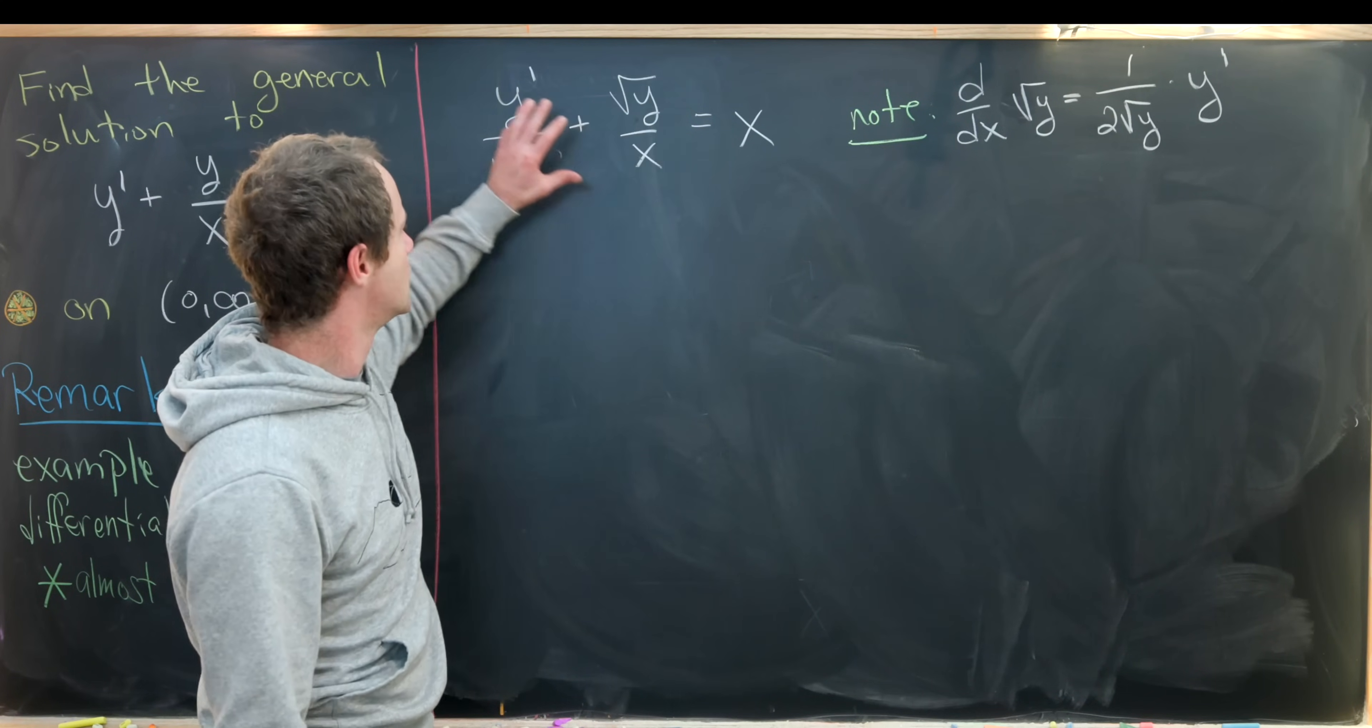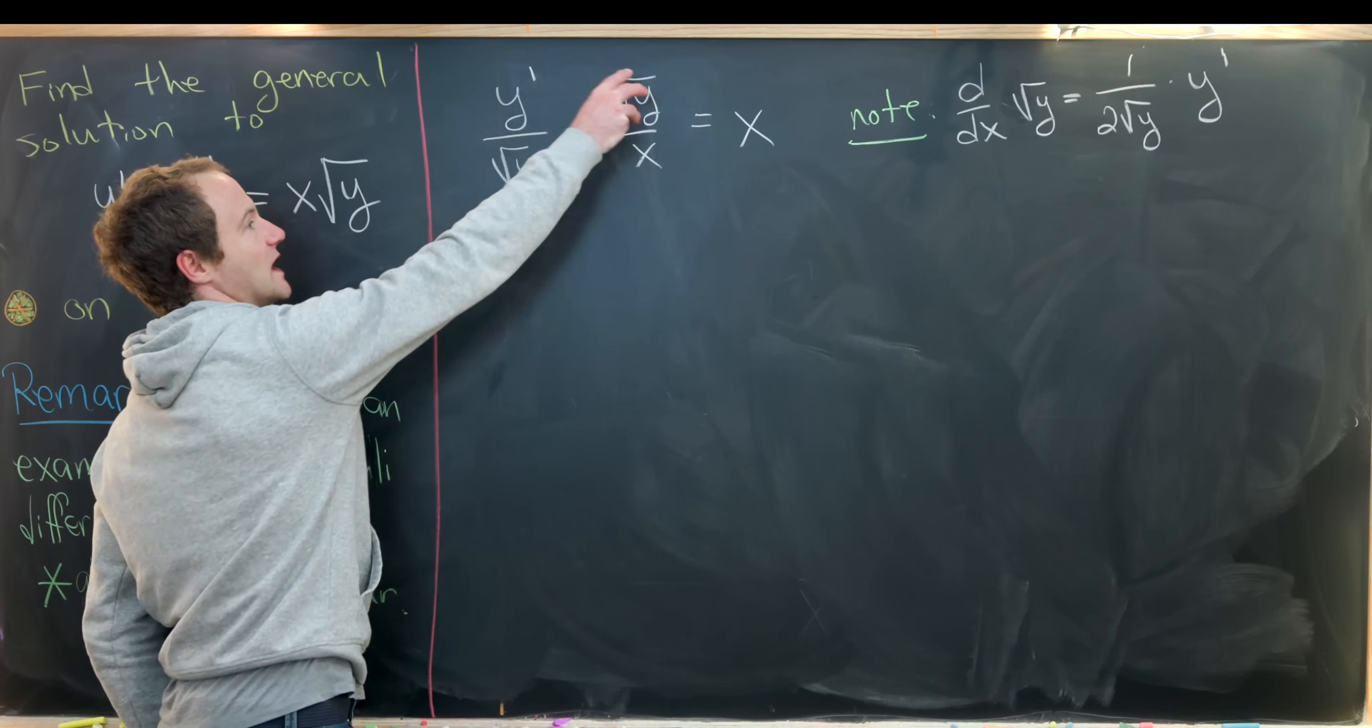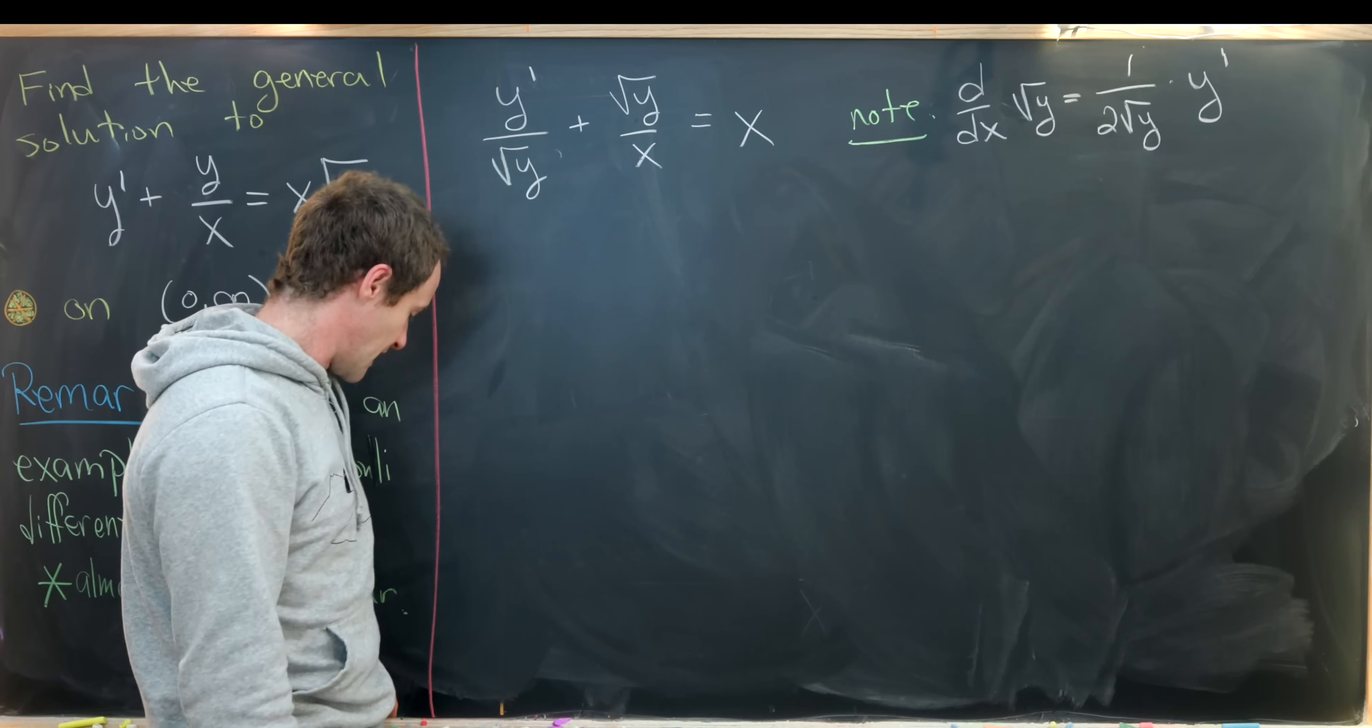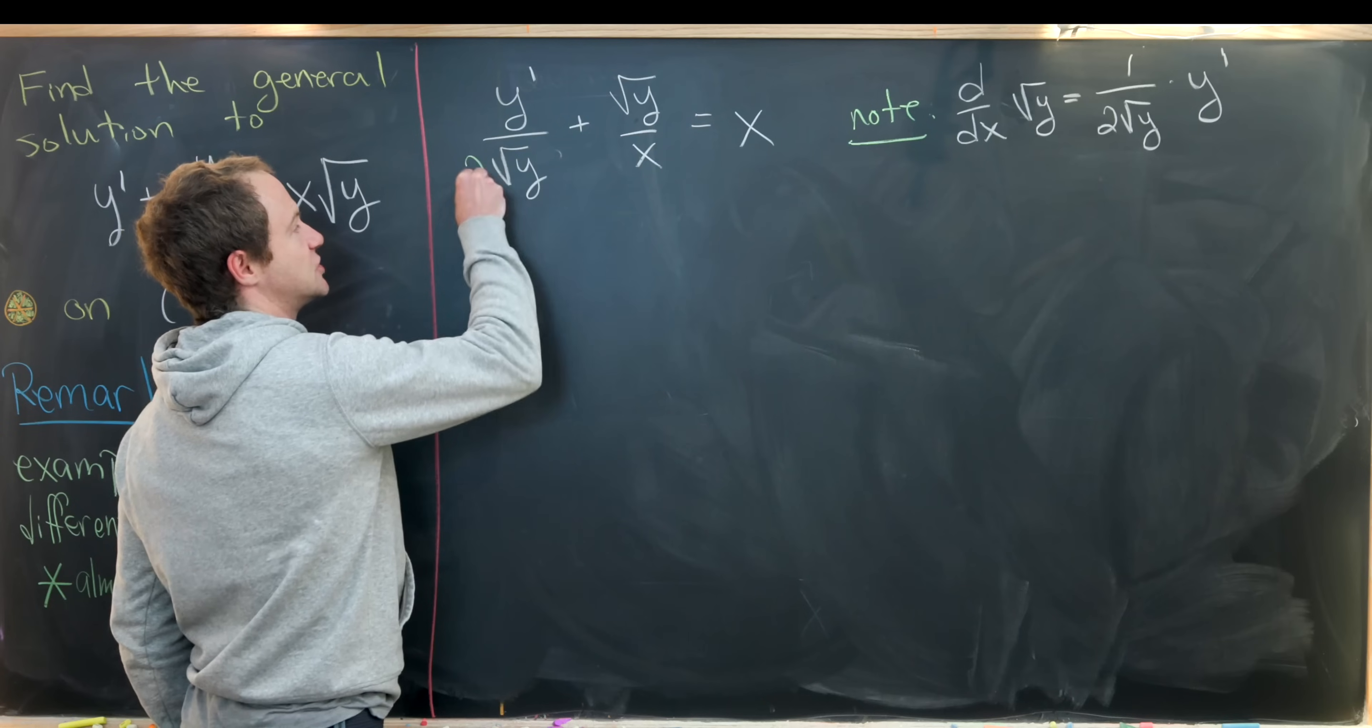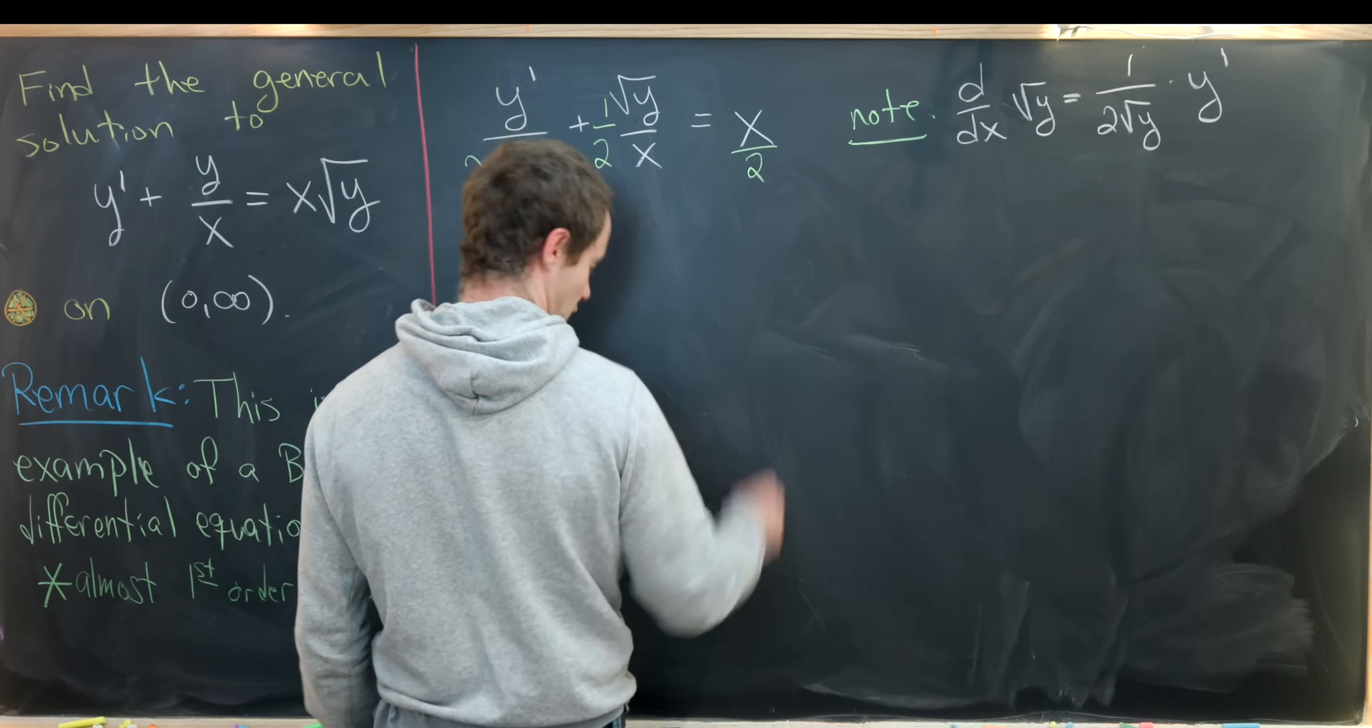It looks like we've got a function here whose derivative is here, but notice this is not quite the derivative of this function. We need to tweak it a little bit by multiplying through by one half, so that'll put a two in the denominator here, a half here, and x over two here.